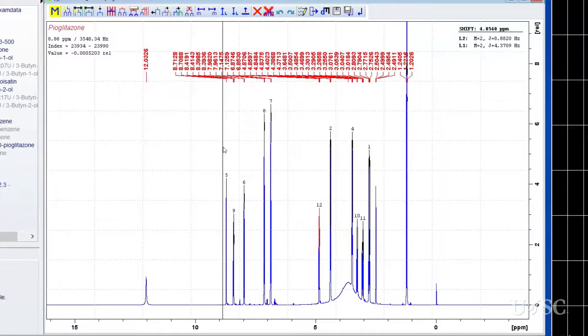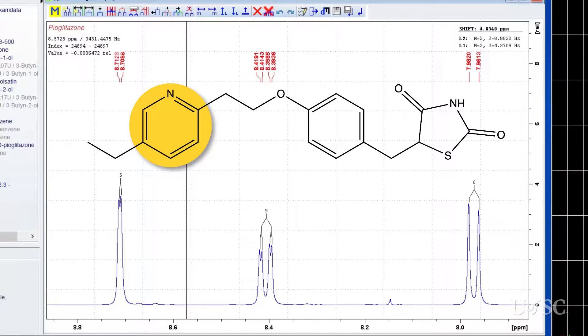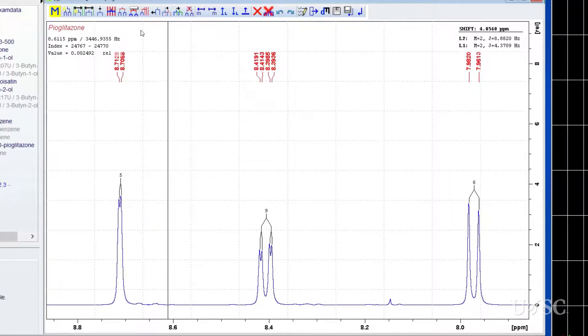The next three resonances are from the protons on the pyridine ring. The smaller coupling constants are from the four bond or meta coupling while the larger splitting is from the three bond coupling of the adjacent protons. The automatic selection correctly defined these shifts.